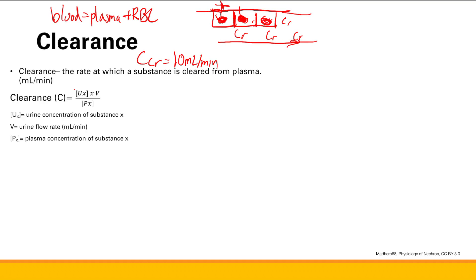We can calculate clearance with this equation: the urine concentration of the substance — let's say creatinine — times the urine flow rate, divided by the plasma concentration of the substance.